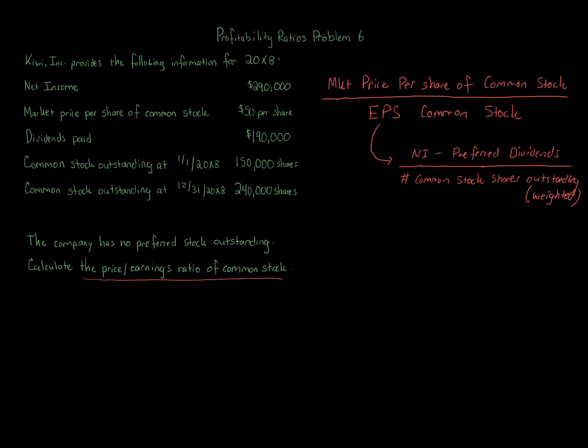All right, so let's start by calculating earnings per share. Net income here is $290,000 minus preferred dividends. Now we do have dividends paid, $190,000, but pay close attention to the wording: no preferred stock outstanding.